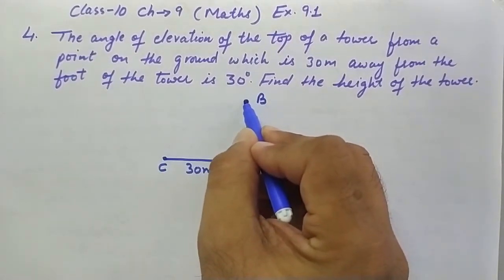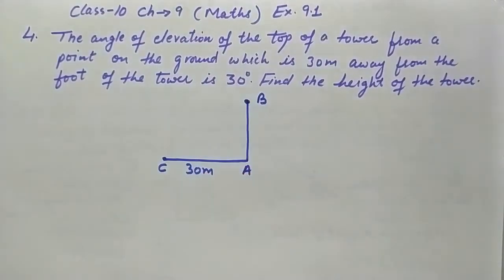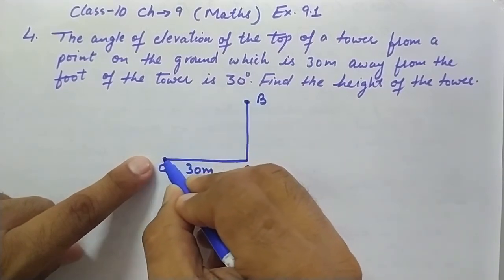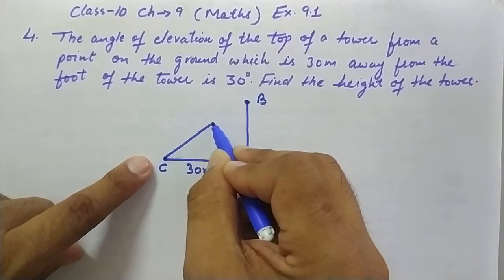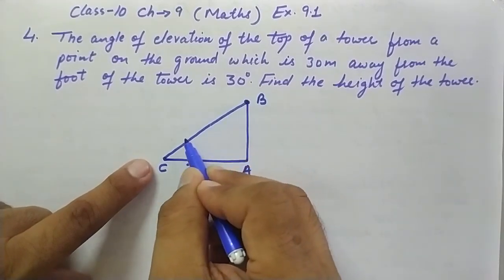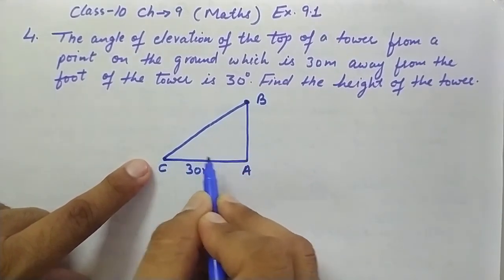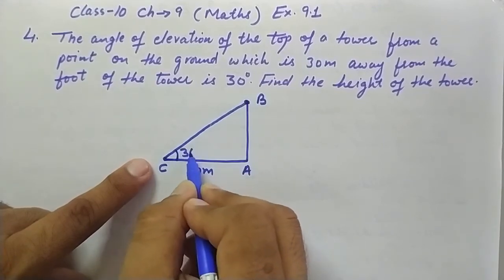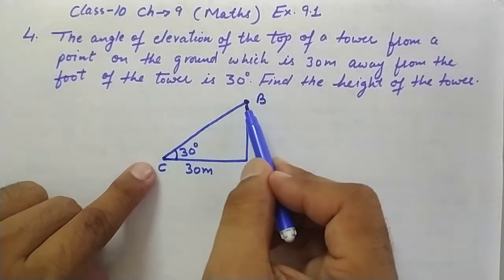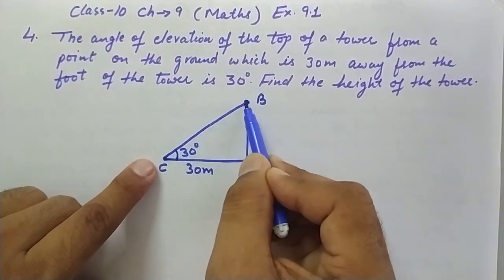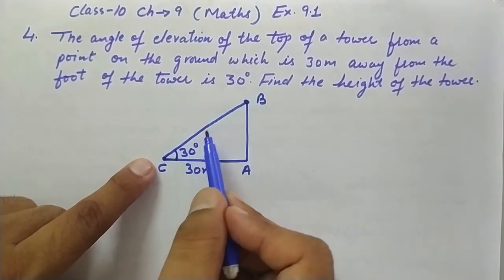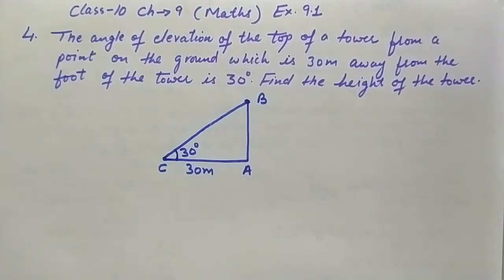Now, what do we mean by angle of elevation? If you are sitting at point C and looking at the top of the tower, your ray of sight goes upward. The angle between the ray of sight and the horizontal is called the angle of elevation. This angle of elevation is given as 30 degrees here.